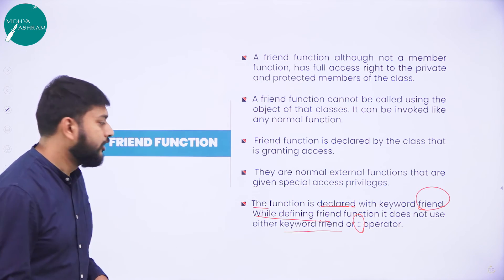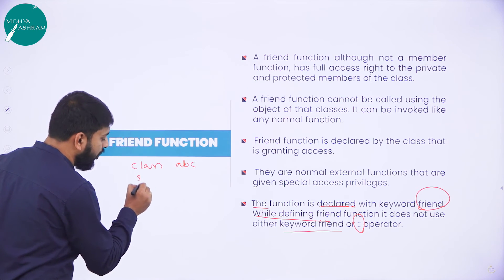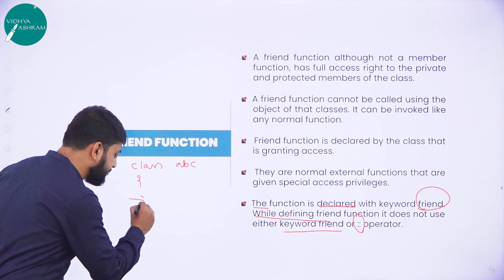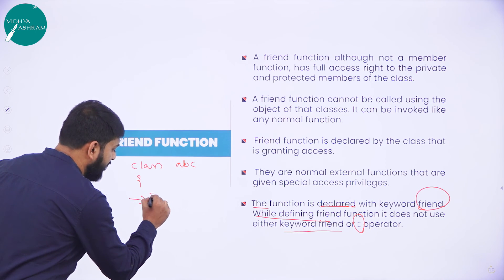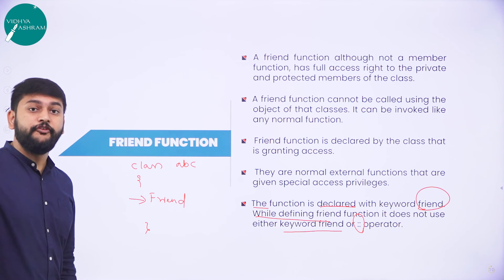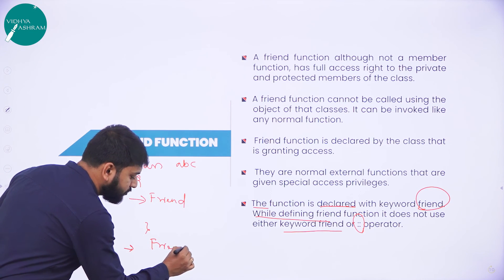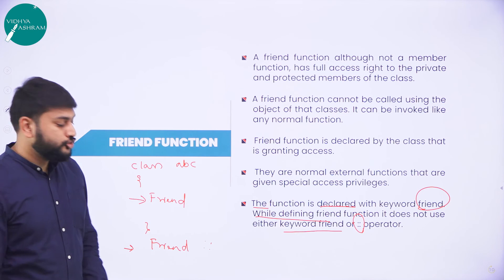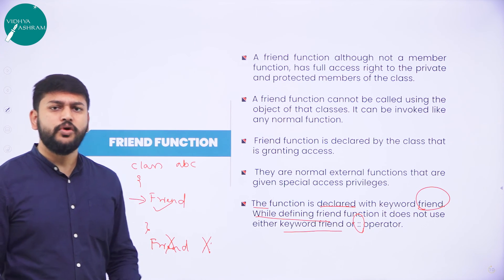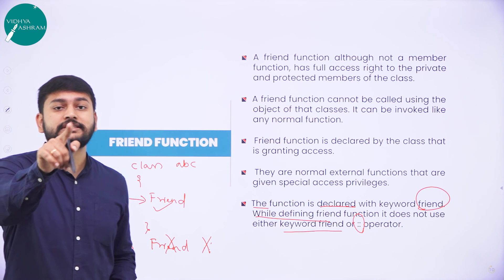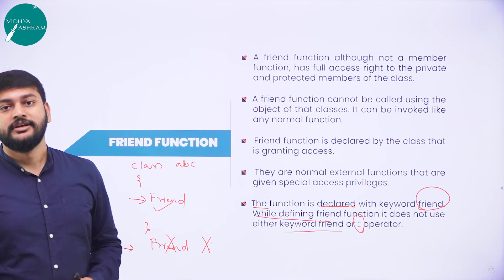Let us understand declare versus define clearly. The declaration of a friend function always happens inside the class, and you use the keyword 'friend' when declaring. When you are defining it, you define it outside the class and you do not use the keyword friend, and you also do not use the scope resolution operator. If you need to understand what is declaration and what is definition, please go back to the previous video on classes and objects.